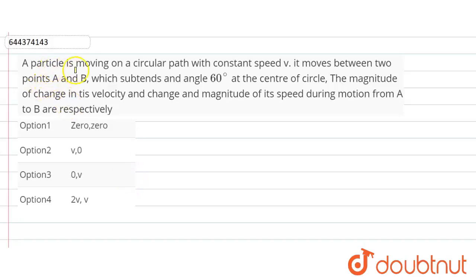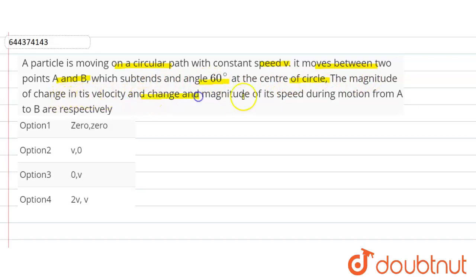Hello friends. The question given here: a particle is moving on a circular path with constant velocity v. It moves between two points, point A and B, which subtend an angle of 60 degrees at the center of the circle. We need to find the magnitude of the change in its velocity and the change in its speed during the motion from A to B.